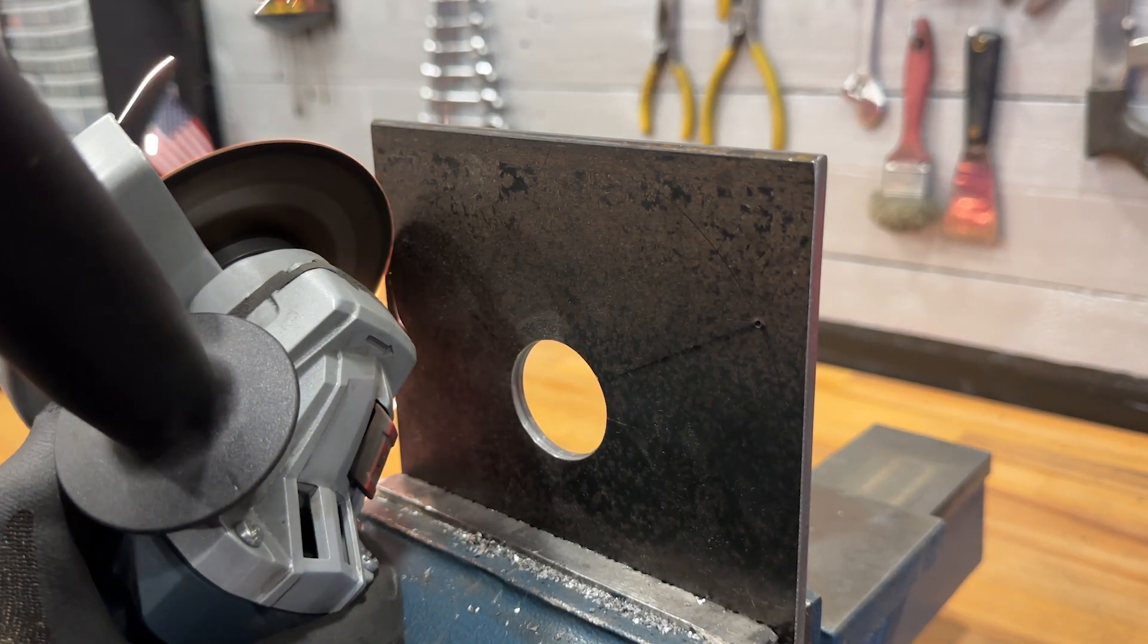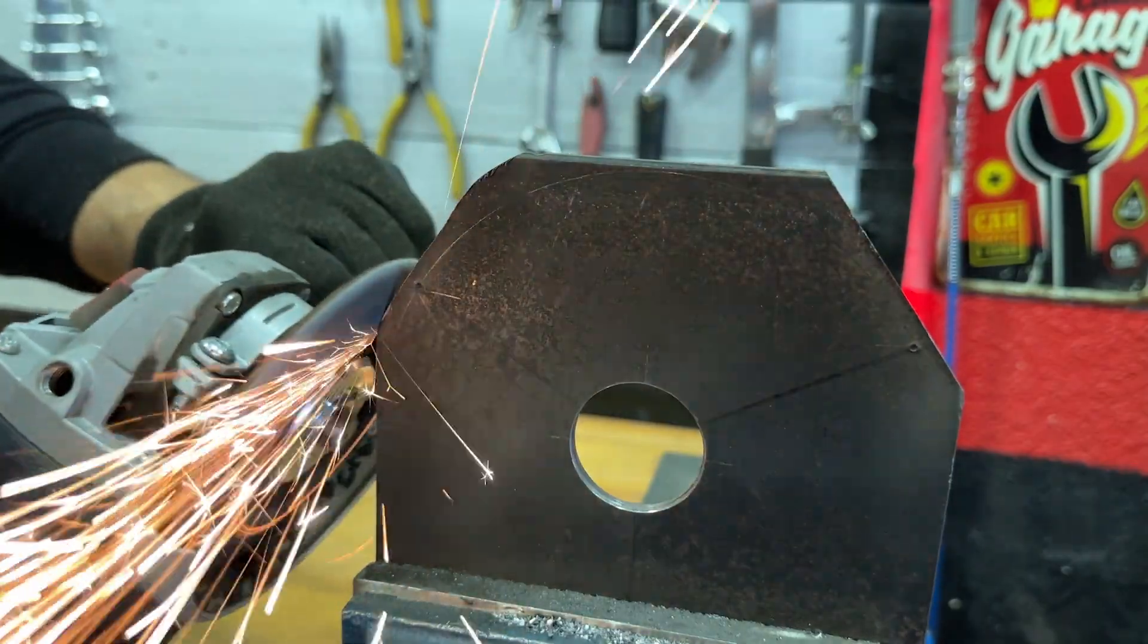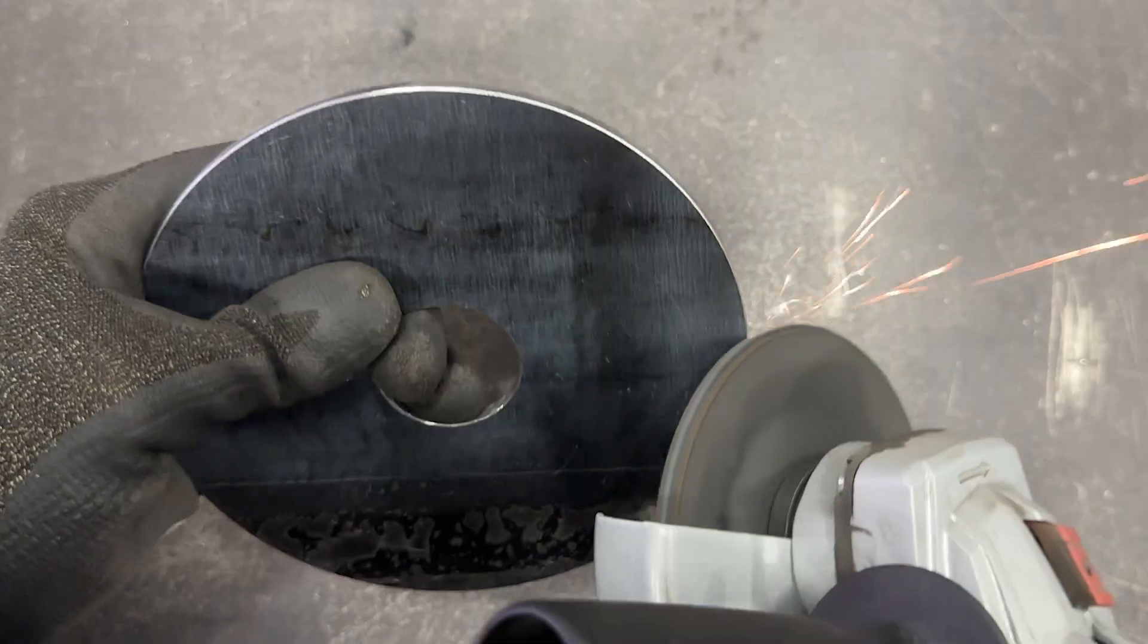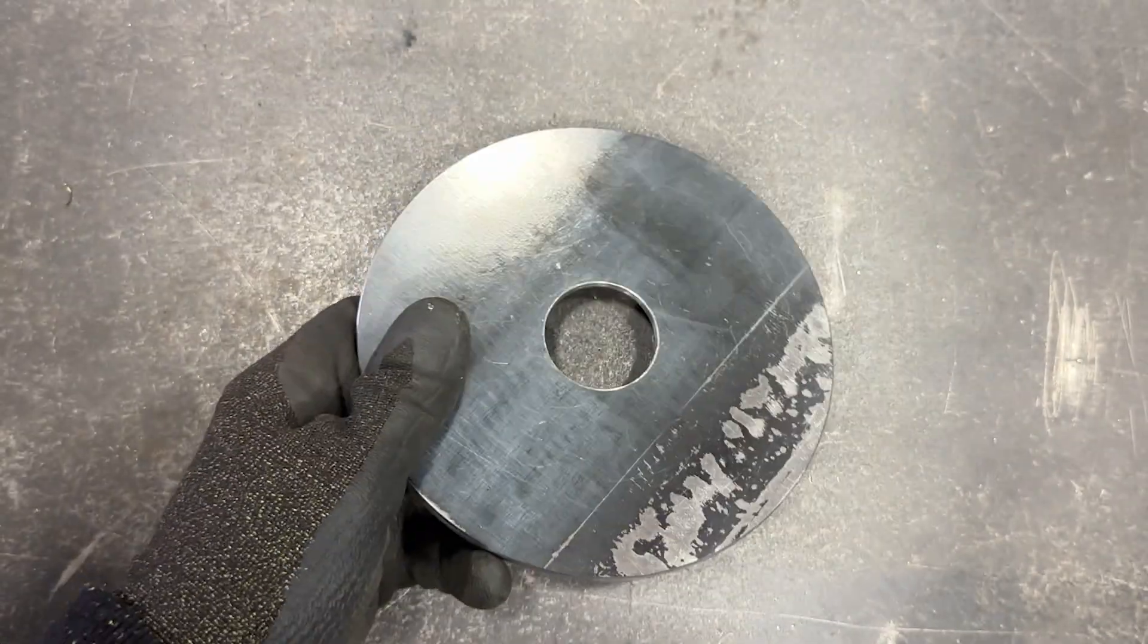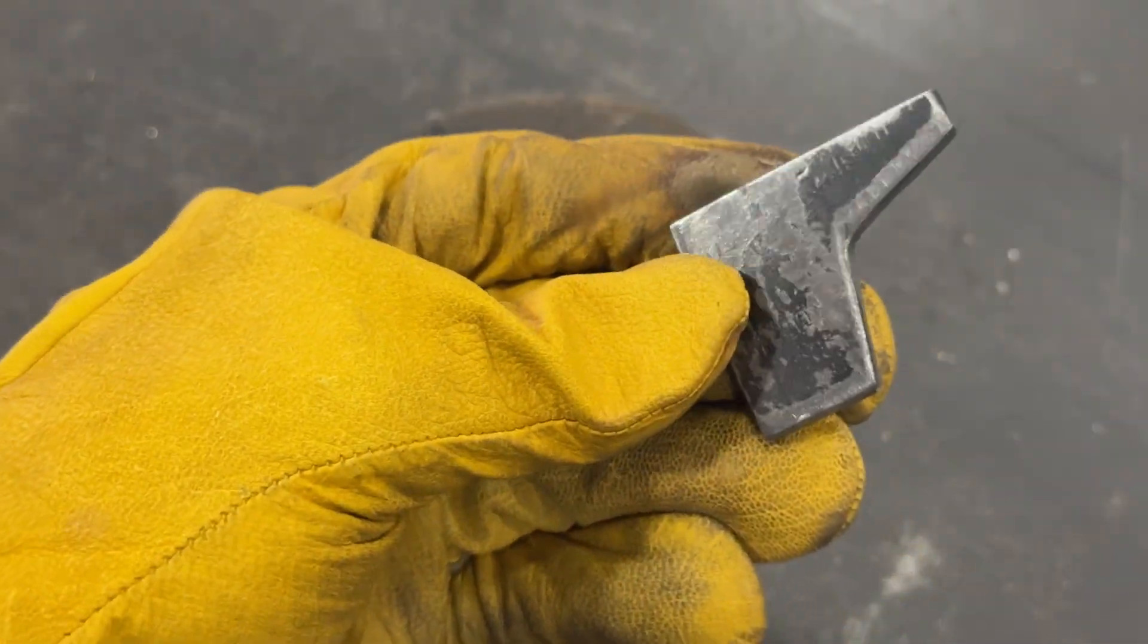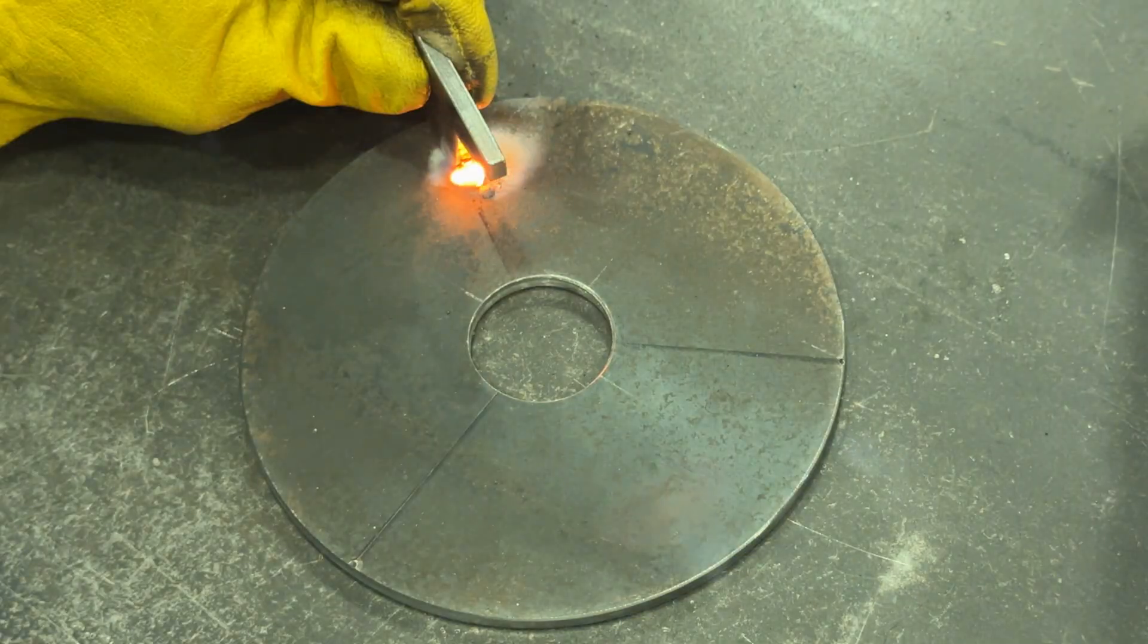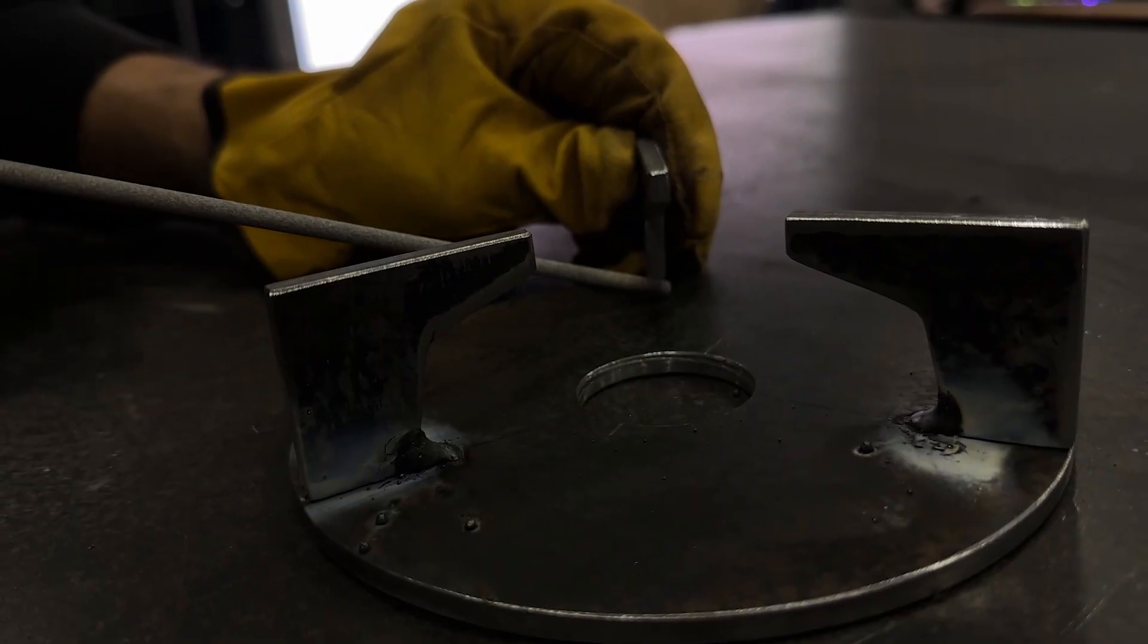Using the angle grinder, we'll trim the corners and give this piece a circular shape. We now have our custom-made lid. Now we'll weld these small pieces to each of the lines we drew. These will be the cooking supports.